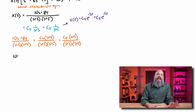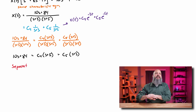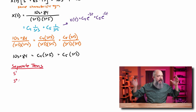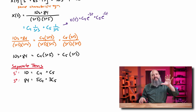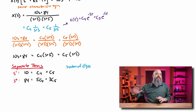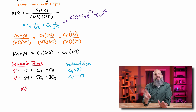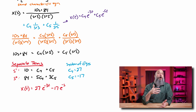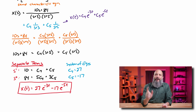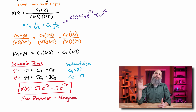After canceling denominators, I'm left with 10S plus 84 on the left-hand side and C4 and C5 numerators on the right. Separating by powers of S: the S to the first power equation gives 10 equals C4 plus C5, and the S to the zero equation gives 84 equals 5C4 plus 3C5. Plugging these into my calculator gives C4 equals positive 27 and C5 equals negative 17. The free response — the homogeneous solution — is 27e to the negative 3t minus 17e to the negative 5t.